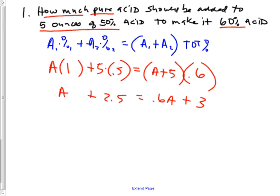Now I'm going to subtract 0.6A on both sides. A lot of people make a mistake right there. You're going to subtract the smaller one. And 0.6 of an A is smaller than a whole A. That's why I'm subtracting 0.6A on both sides.